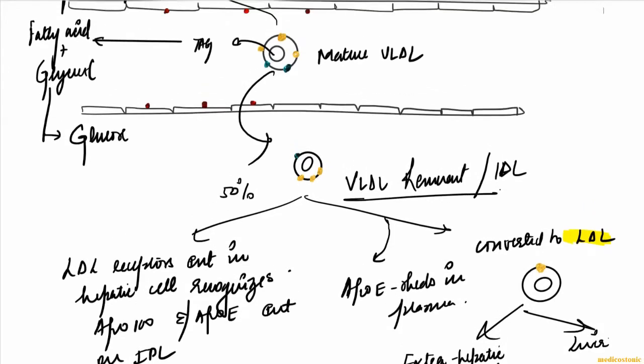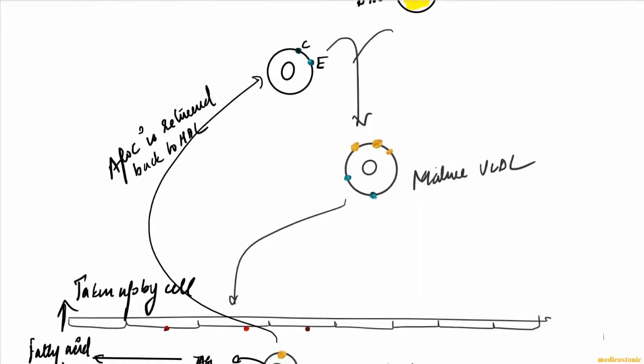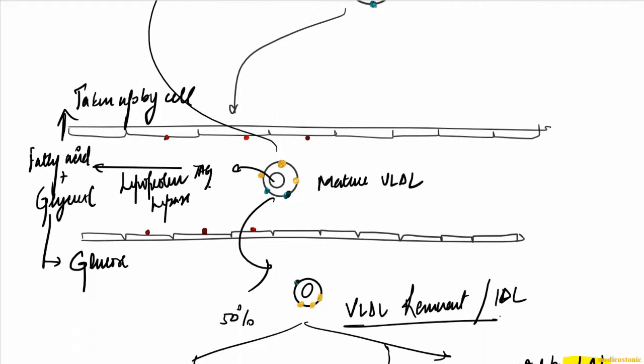A basic overview of what we just read: the liver produces the nascent VLDL which has three apo lipoproteins: apo B100, C, and E. For its maturation, the HDL molecule contributes apo C and apo E, thus helping in its maturation.